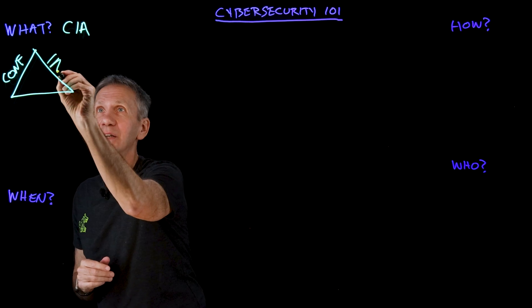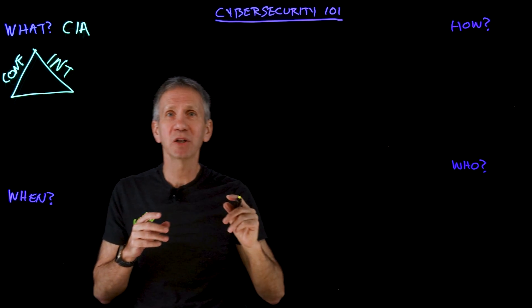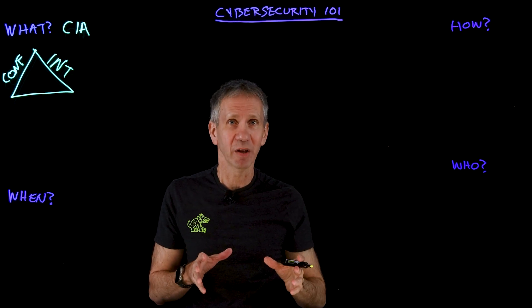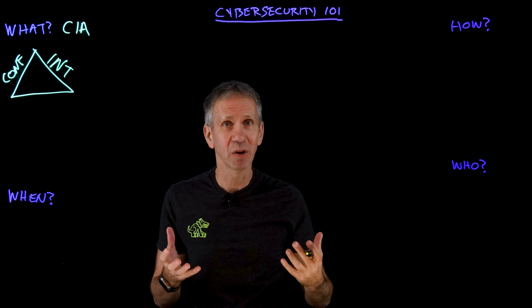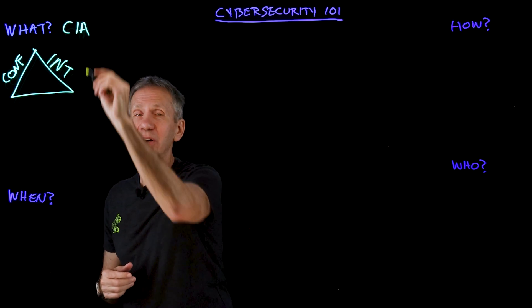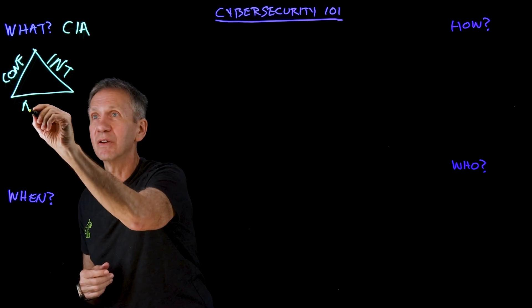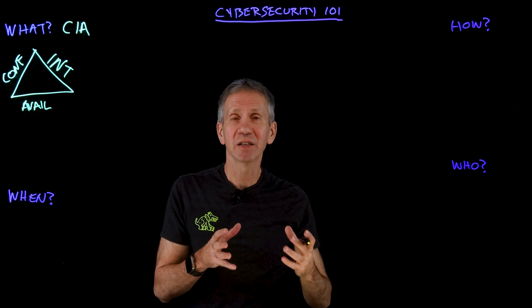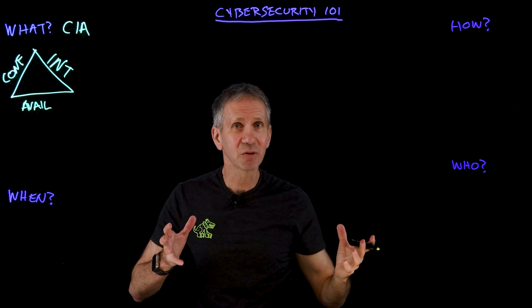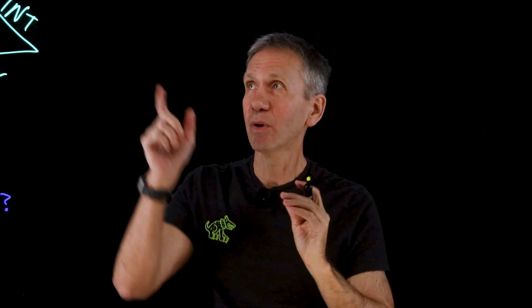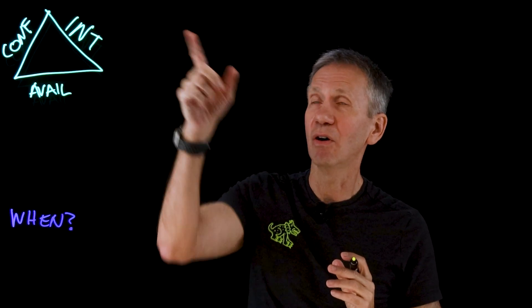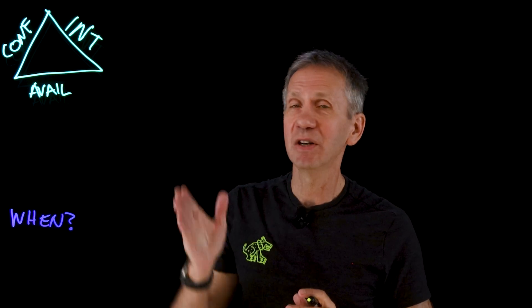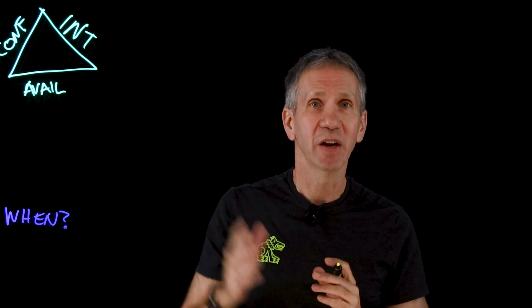The second is integrity. In this case, we want to make sure that the data hasn't been tampered with, that it's still reliable. And then the last part of the CIA triad is availability — trying to guard against denial of service attacks, where an attacker is trying to take the system down and make it unavailable for everyone else. So what we're doing in cybersecurity is all about CIA: confidentiality, integrity, and availability.